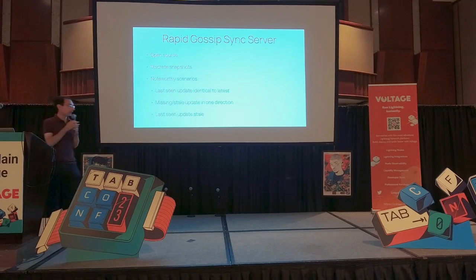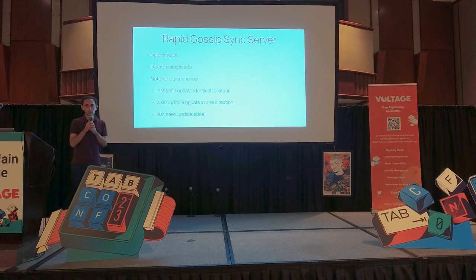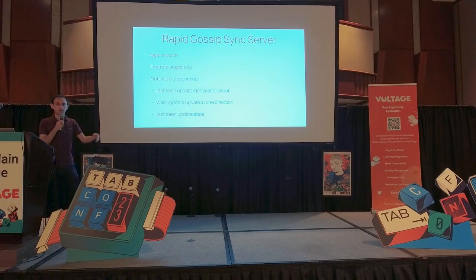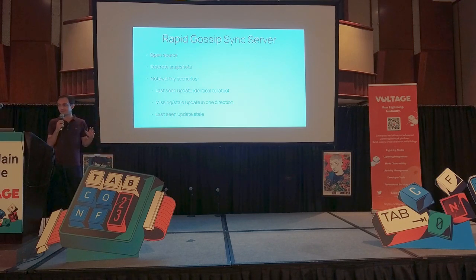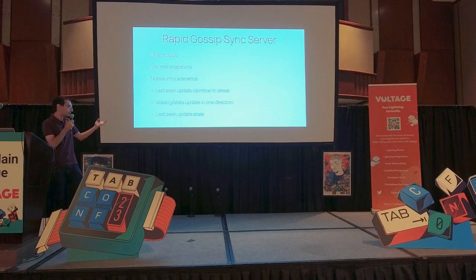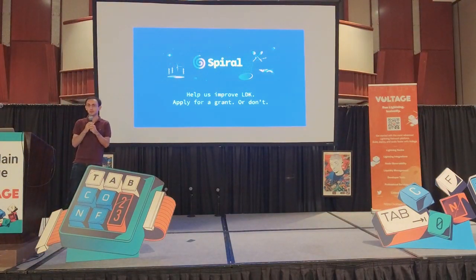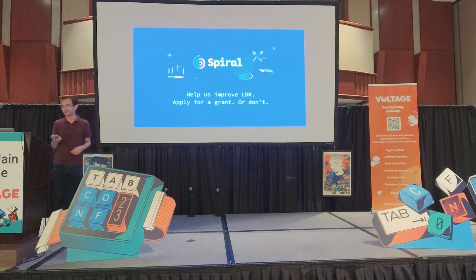If you want to run your own Rapid Gossip Sync server and you don't want to trust the public instance, the code is open source and feel free to check it out. There is a GitHub link which I foolishly did not include here. The snapshots have to be discrete — we calculate them on the fly — but feel free to try it out and run it. We hope that this also inspires you to build projects that are also really efficient and optimized. Thank you.